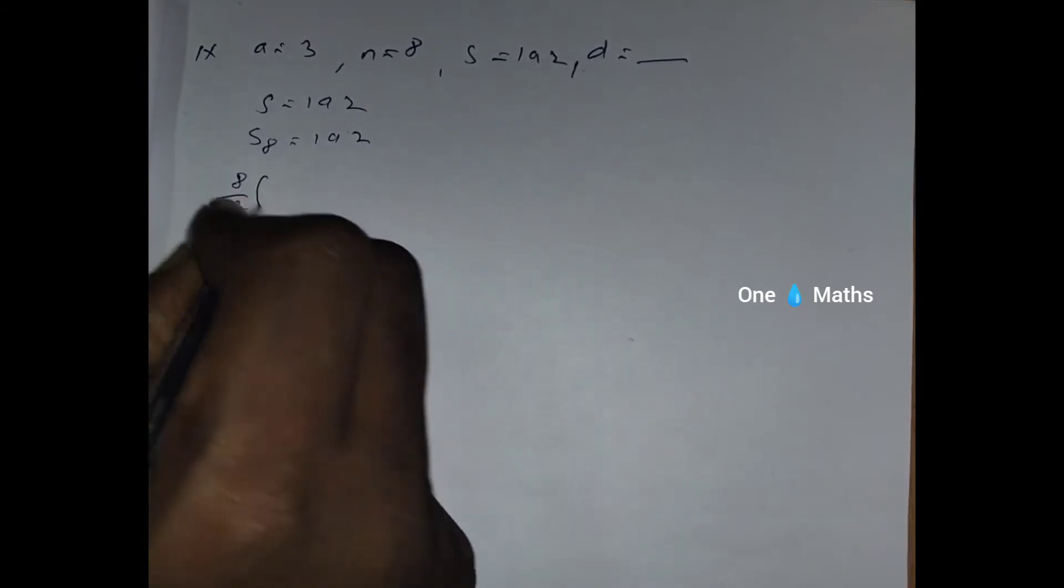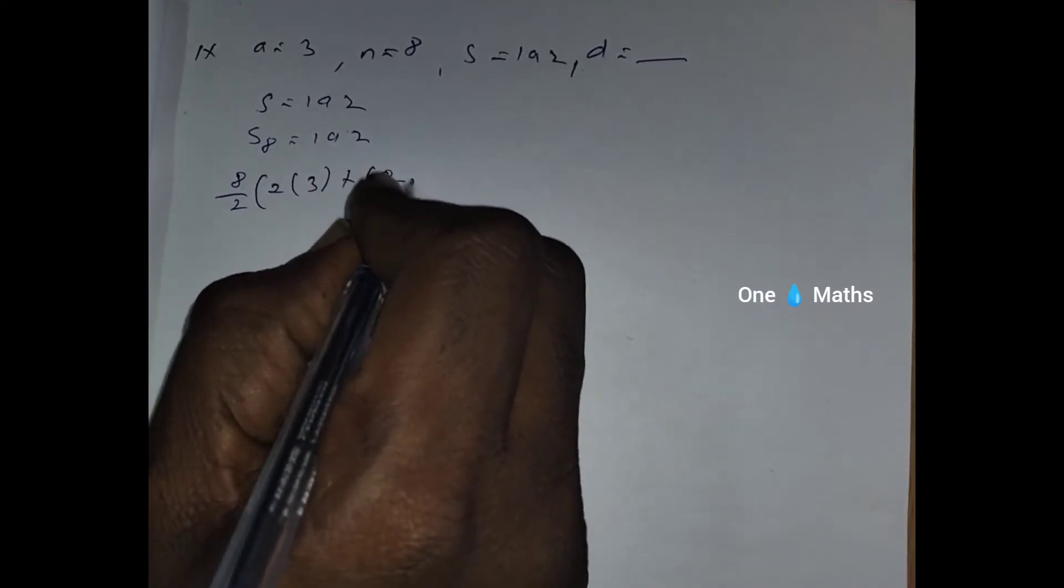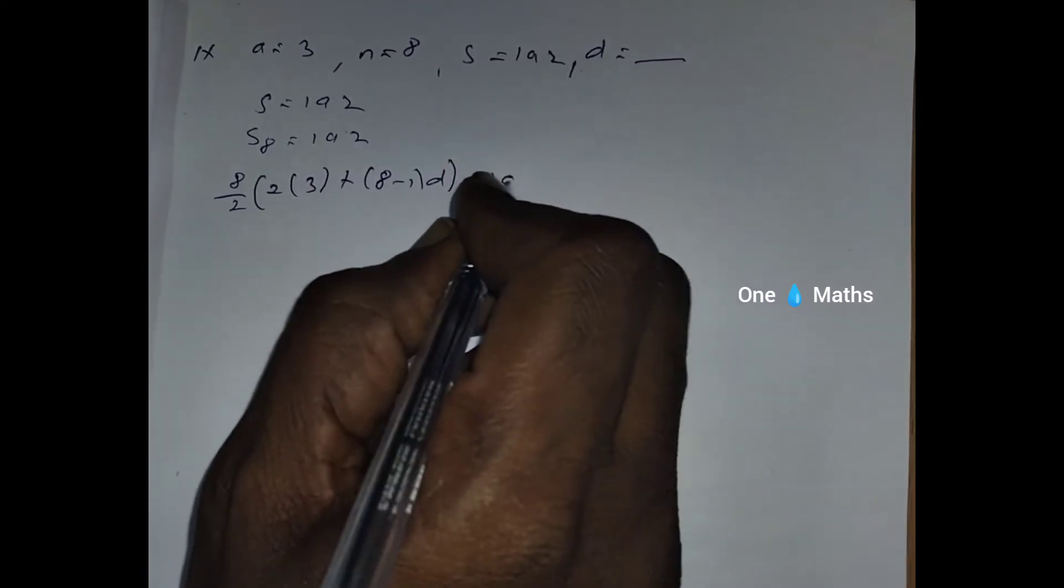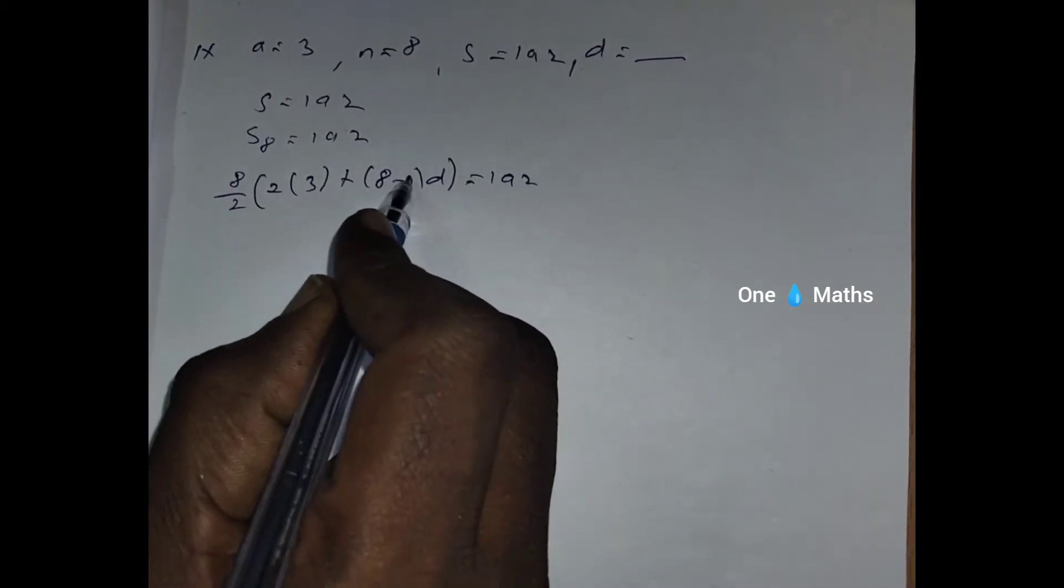So 8 by 2, 2A, A value is 3, plus 8 minus 1, into D equals 192. So N by 2, 2A plus N minus 1, into D.